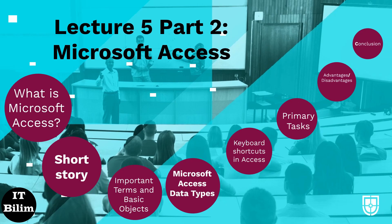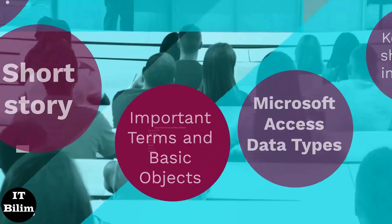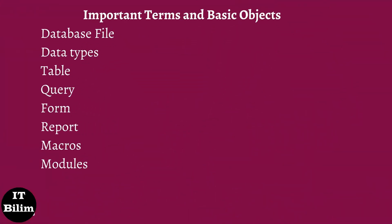Important terms and basic objects. We will learn about some important terms and basic objects in Microsoft Access. Database file: it is a file which stores the entire database. The database file is saved to your hard drive or other storage devices. Data types: data types are the properties of each field.